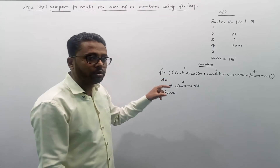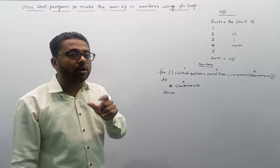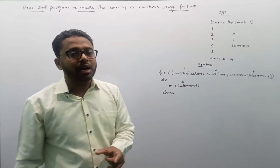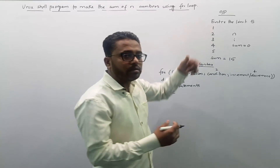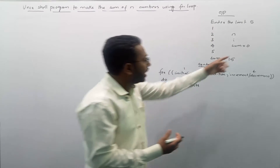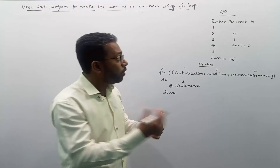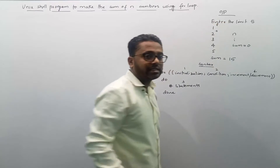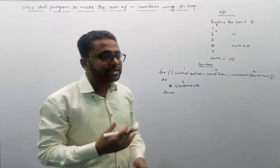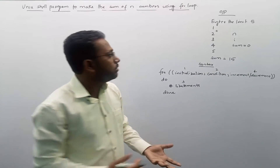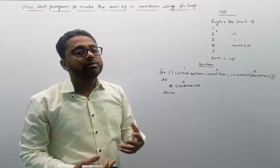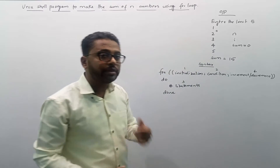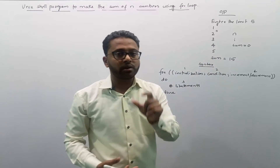First we initialize sum to zero, because for the first iteration: zero plus 1 gives 1. Then 1 plus 2 gives 3. Then 3 plus 3 gives 6. Then 6 plus 4 gives 10. And finally 10 plus 5 gives 15 as the output. So we add each number from 1 to 5 incrementally to sum.